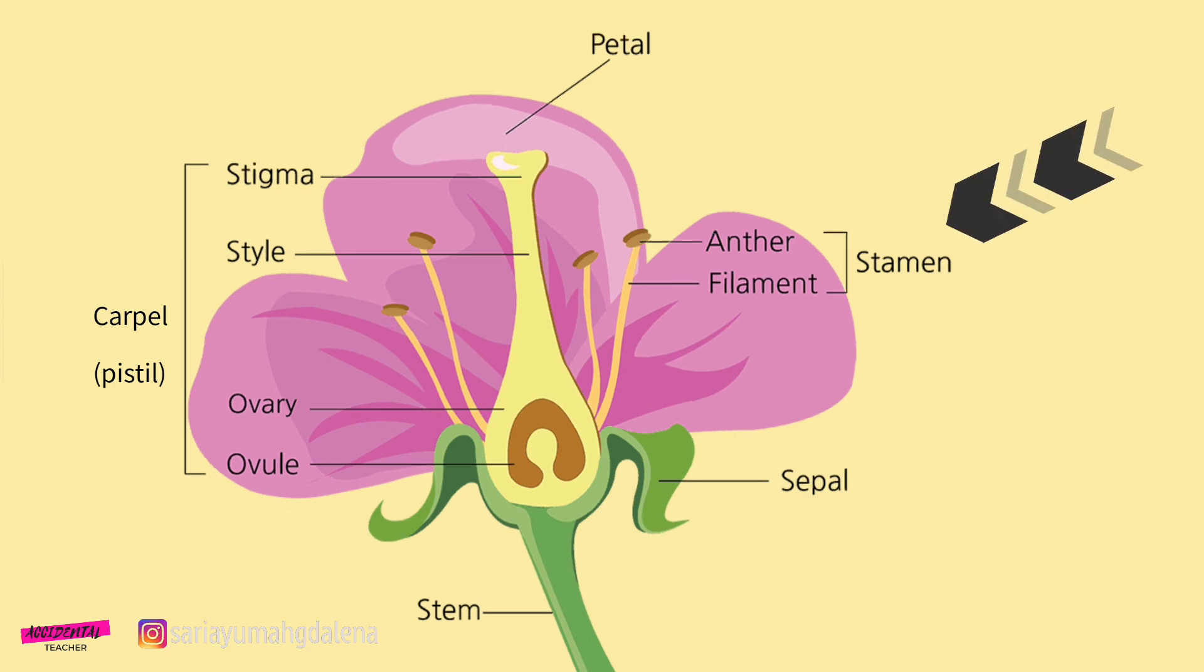The male organ is called the stamen. The stamen consists of a stalk called the filament and an anther which carries the pollen grains.